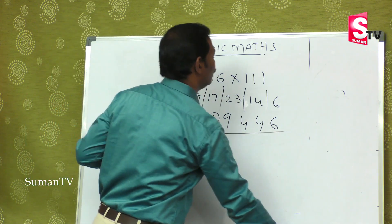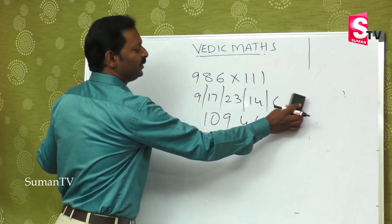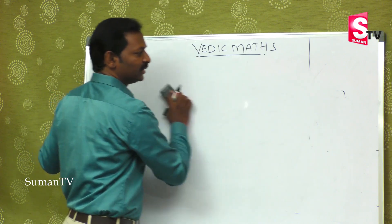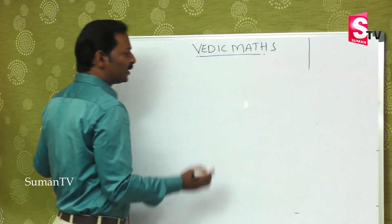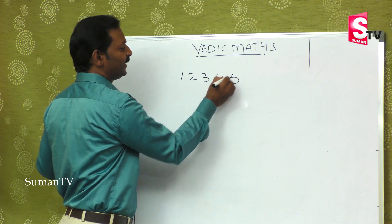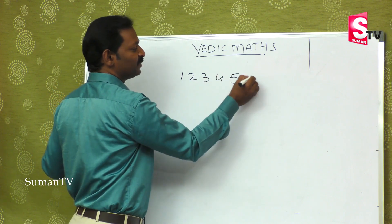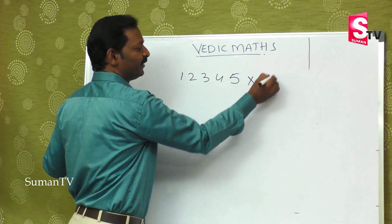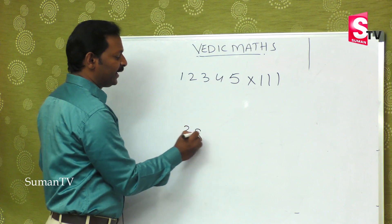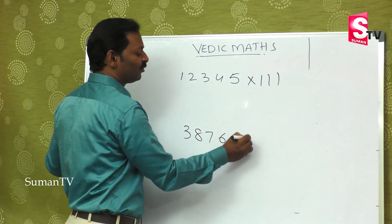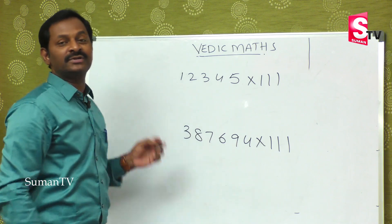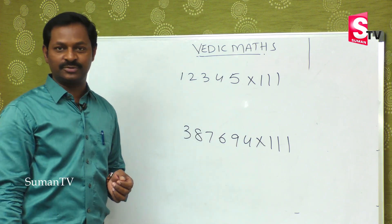Just as we did with bigger numbers multiplied by 11, now with a bigger number like 12345 multiplied by 111, the answer is 3, 8, 7, 6, 9, 4 multiplied through to give the right answer.